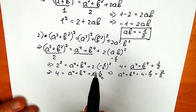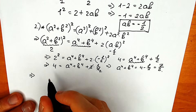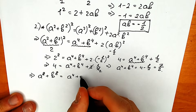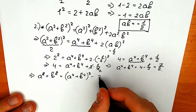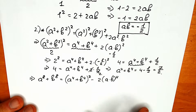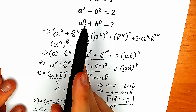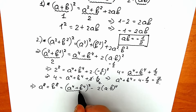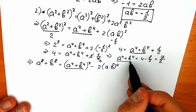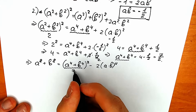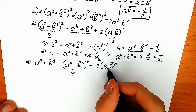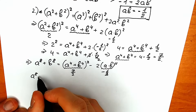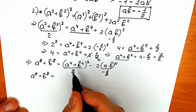Now let's go back to our expression. We rewrite: a to the eighth plus b to the eighth equals (a to the fourth plus b to the fourth) squared, minus 2 times (ab) to the fourth. We already know a to the fourth plus b to the fourth equals seven halves, and ab equals minus one half. Plugging in: a to the eighth plus b to the eighth equals (seven halves) squared, minus 2 times (minus one half) to the fourth power.